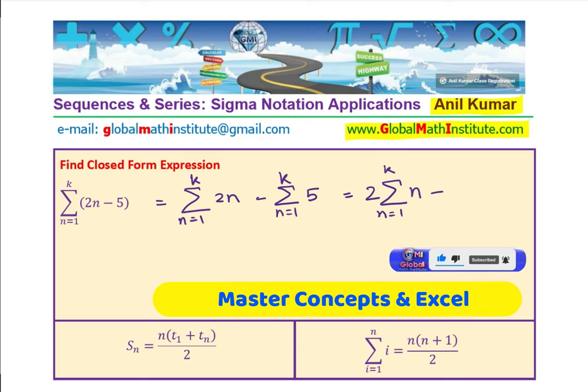So we can write this as 5 times k, which is the sum of numbers from 1 to k of 5 of them. So 5k, you see that? So we get this expression minus 5k.